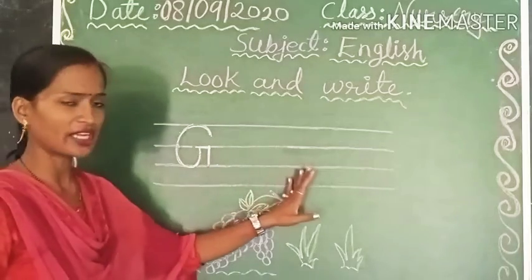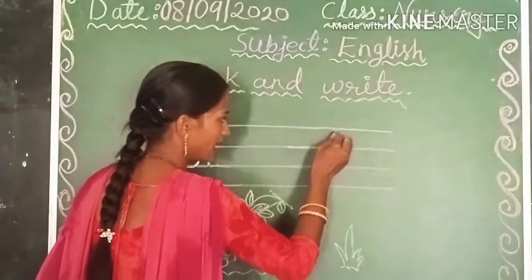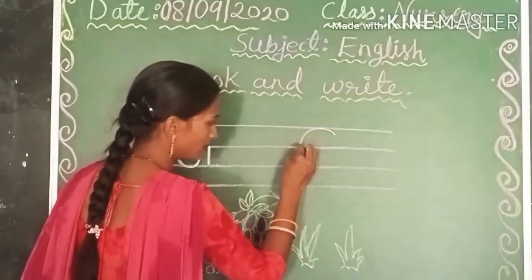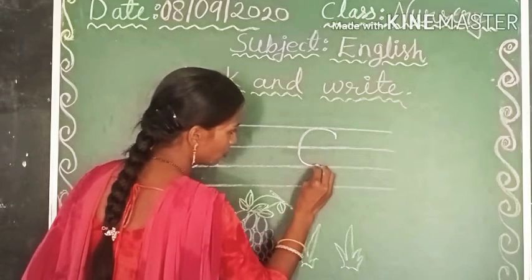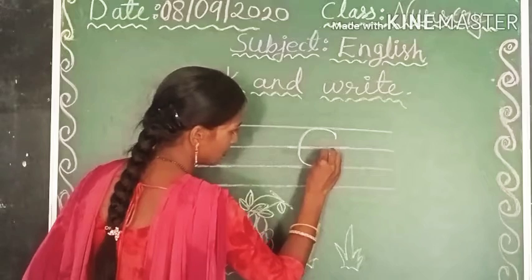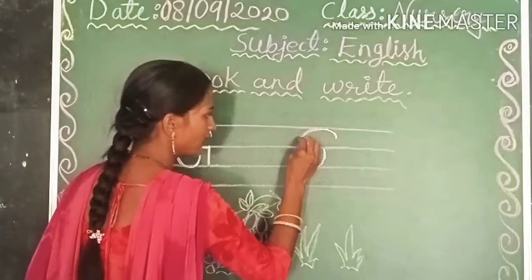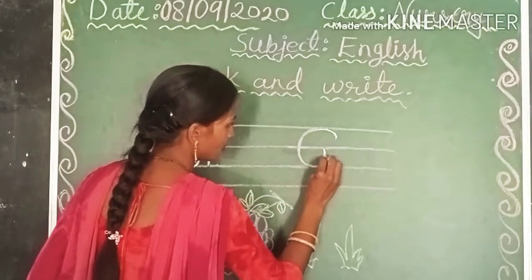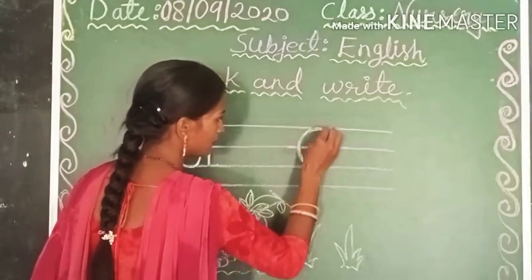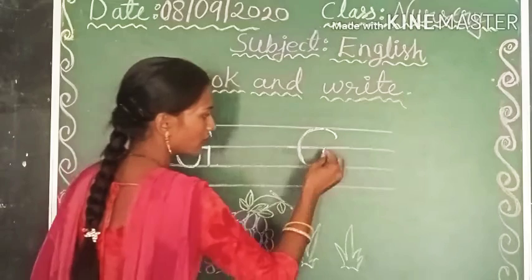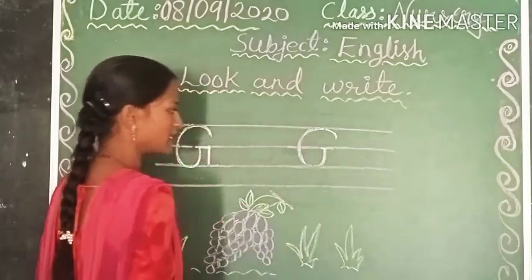चलिए एक बार और इसे सीखते हैं, आप लोग इस पर ध्यान दीजिएगा। तो फिर से देखिए, मैं एक circle बना रही हूँ। सबसे पहले आपको एक circle ऐसे बनाना है, ध्यान दीजिए बच्चों। यहाँ second line पे इसे touch कर देना है। जैसे आप C बनाते हैं, circle की तरह, घुमाव लेते हुए। तो जब आप यह second line पे touch कर दोगे, उसके बाद हमें sleeping line ऐसे बनानी है।